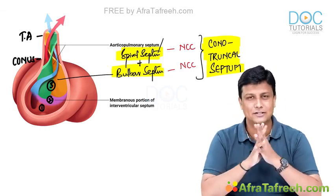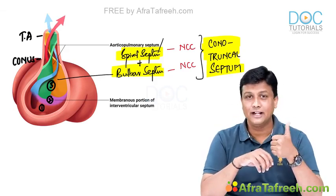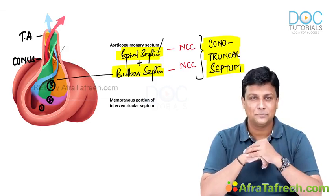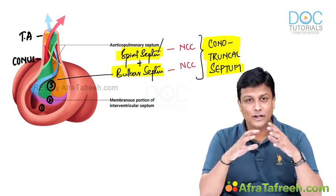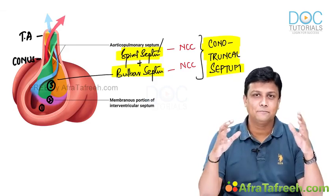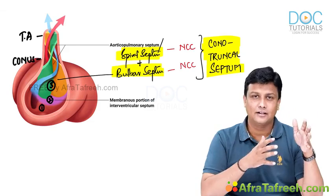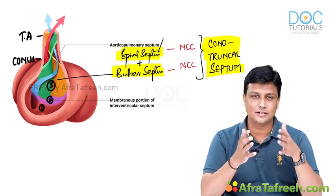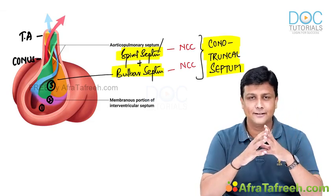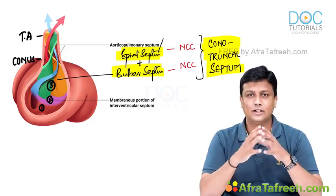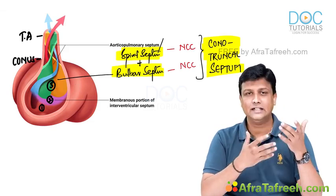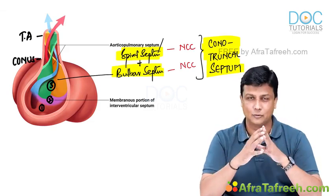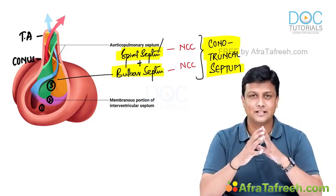To conclude: the interventricular septum has three parts — muscular part derived from cardiac muscle, membranous part derived from endocardial cushion, and bulbar part derived from neural crest cells. That completes the topics of development of inter-atrial septum and interventricular septum. According to our plan, we are done with development of the heart, inter-atrial septum, and ventricular septum. Next we will learn about development of the arterial system and venous system.